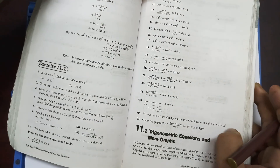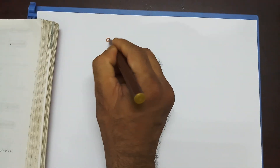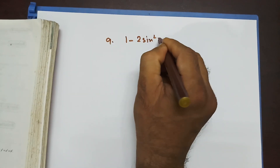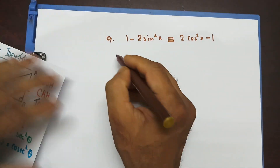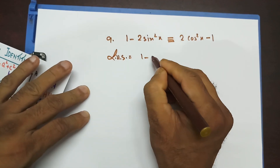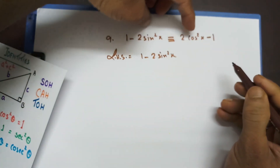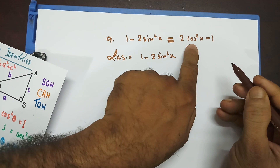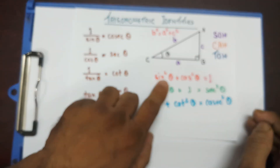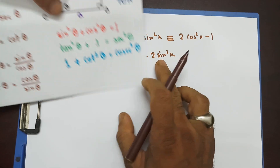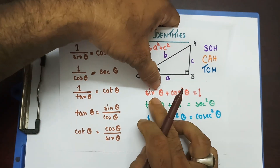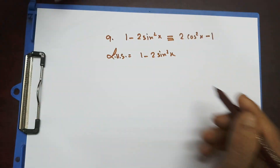Let's do question number 9. Question 9 says: 1 minus 2 sin squared x is identical to 2 cos squared x minus 1. Left-hand side equals 1 minus 2 sin squared x. Comparing left and right, the right-hand side has no sin squared — only cos squared. One of the trigonometric identities says sin squared theta plus cos squared theta equals 1, so sin squared theta can be written as 1 minus cos squared theta. That's what I'm going to substitute.